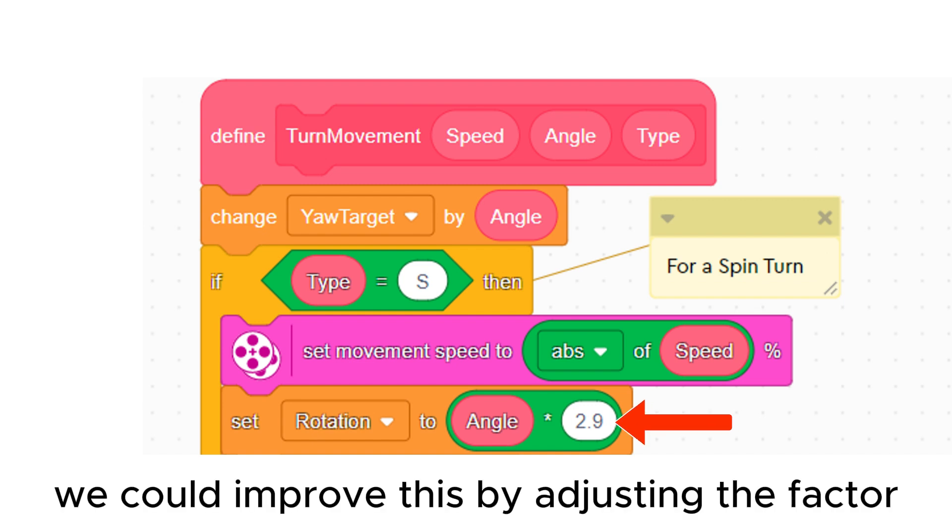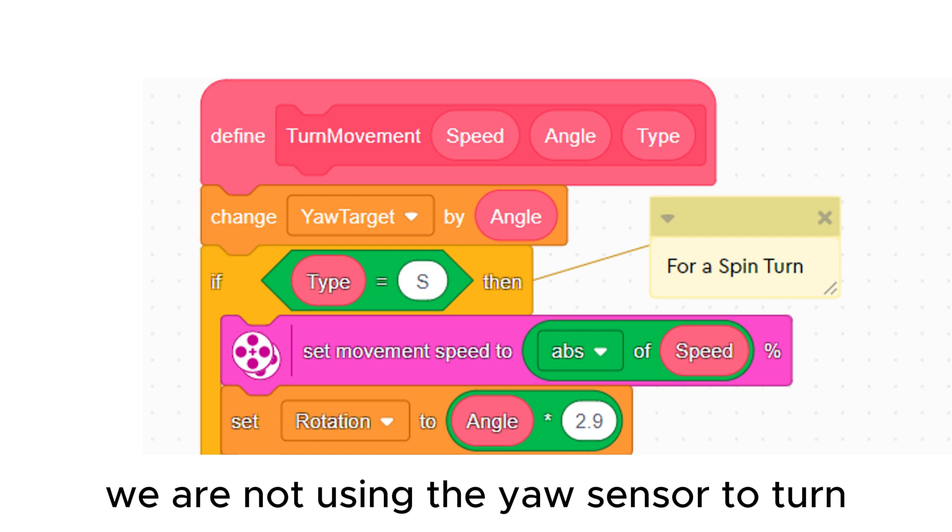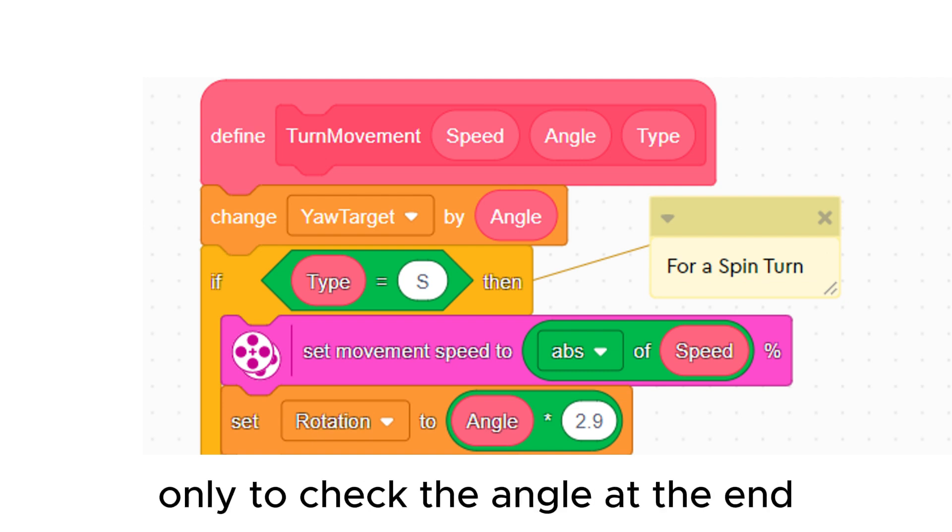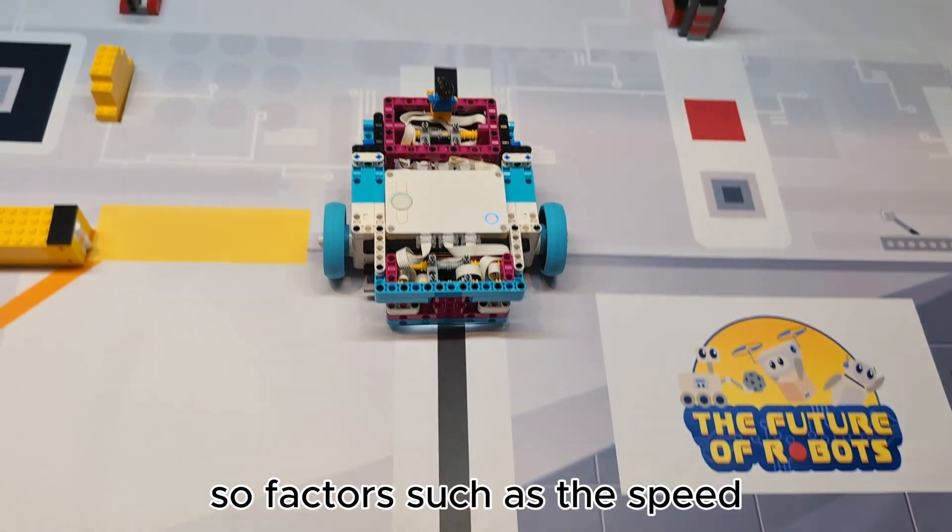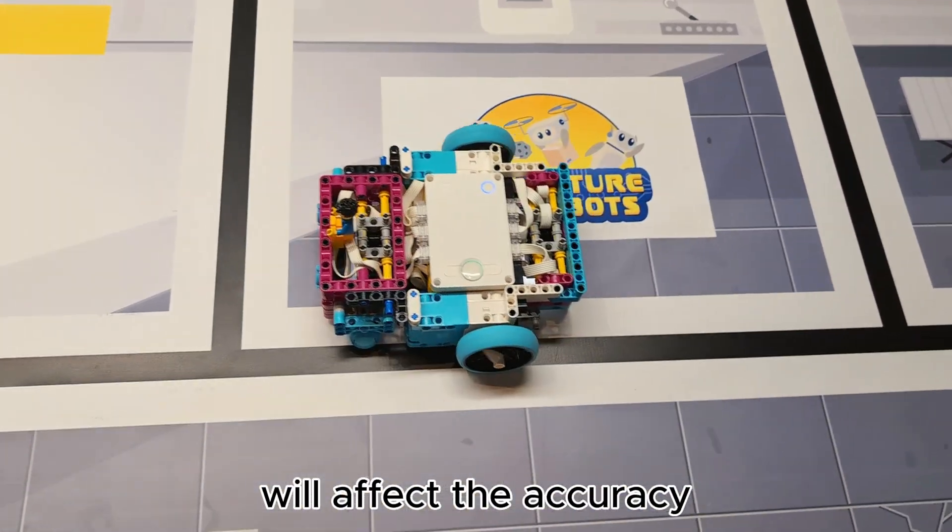We could improve this by adjusting the factor in the turn my block. We are not using the yaw sensor to turn, only to check the angle at the end. So factors such as the speed and how clean the wheels are will affect the accuracy.